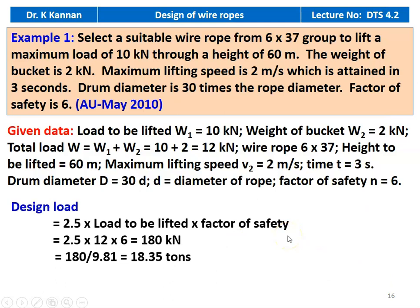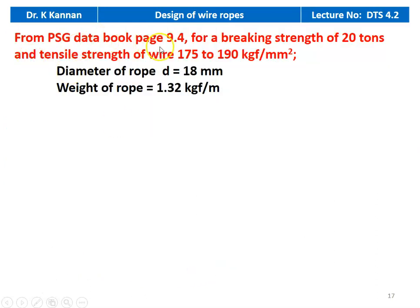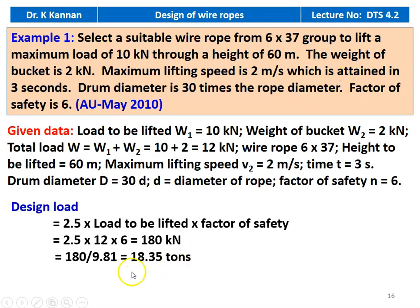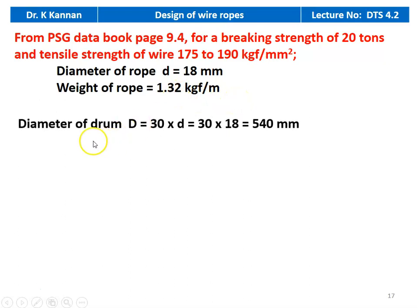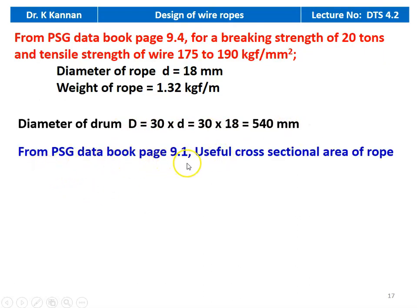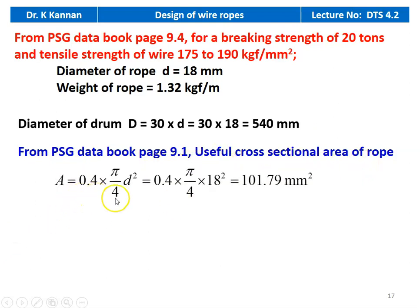Height to be lifted = 60 m, maximum lifting speed = 2 m/s, time = 3 s, drum diameter D = 30d, and factor of safety N = 6. Design load = 2.5 × total load × factor of safety = 2.5 × 12 × 6 = 180 kN = 180/9.81 = 18.35 tons. From the PSG data book page 9.4, for a breaking strength of 20 tons and tensile strength 175–190 kgf/mm², diameter of rope = 18 mm and weight of rope = 1.32 kgf/m. Drum diameter D = 30 × 18 = 540 mm. From page 9.1, cross-sectional area of rope A = 0.4 × (5/4) × d² = 0.4 × 18² = 101.79 mm².